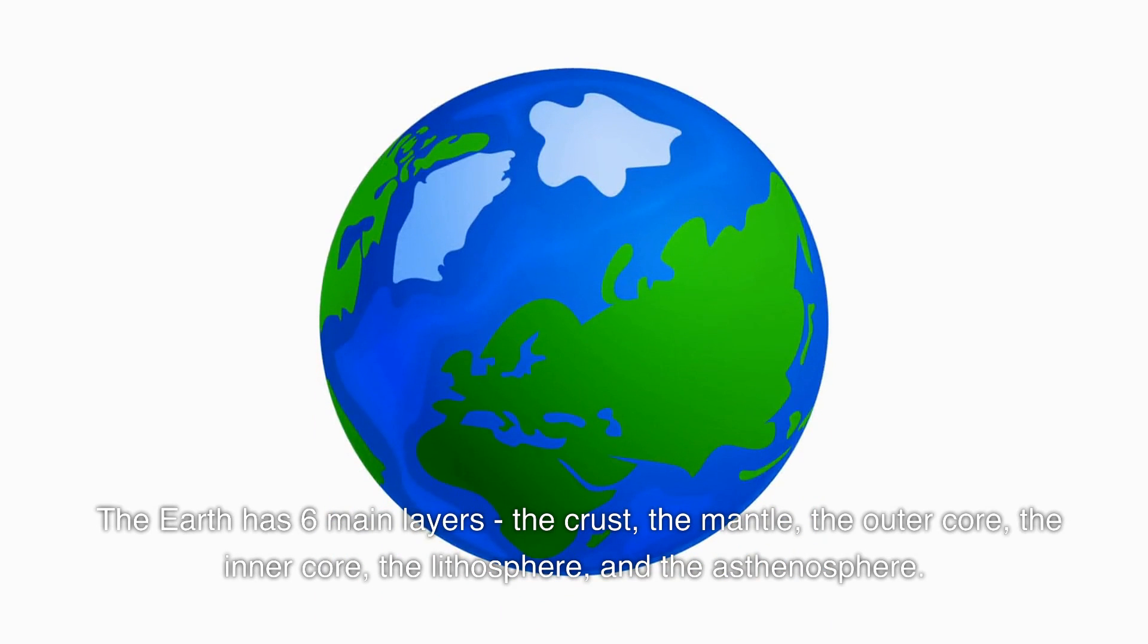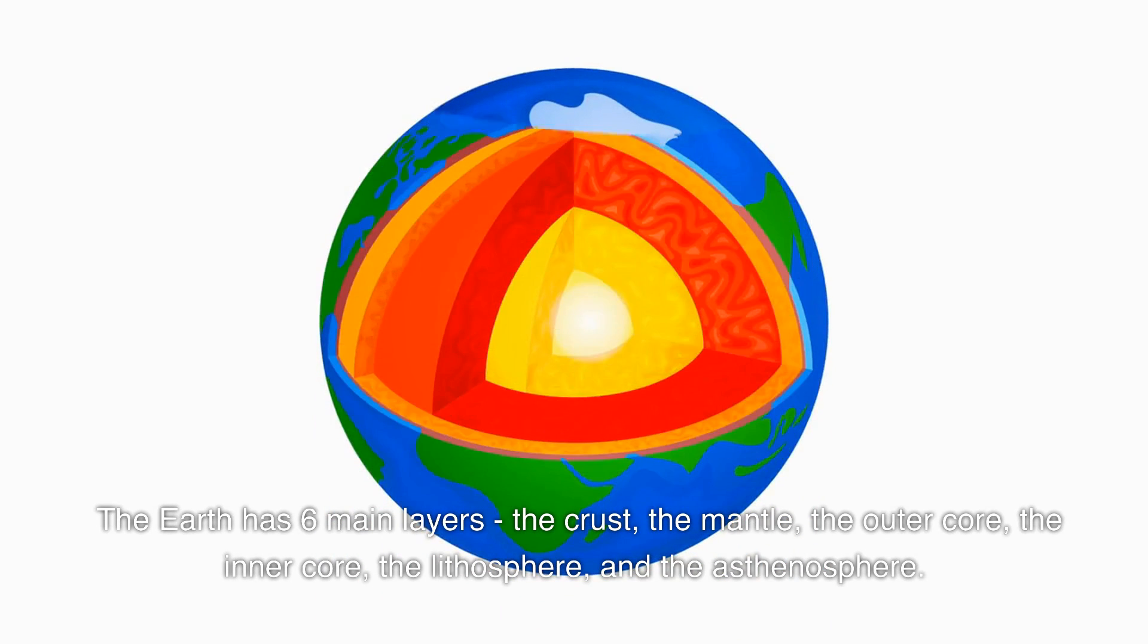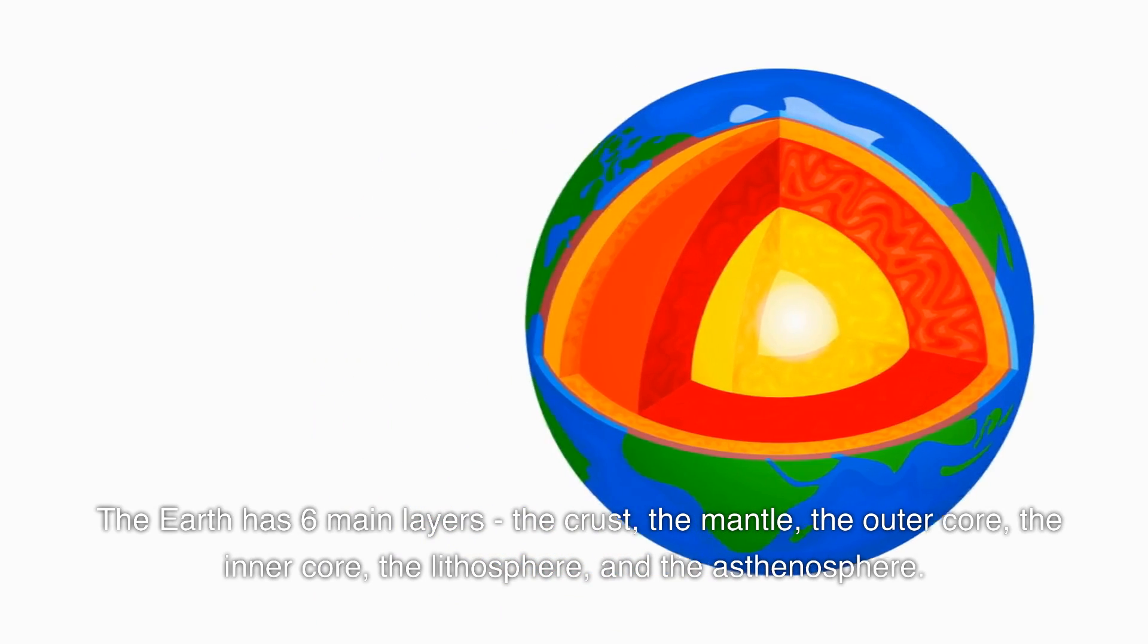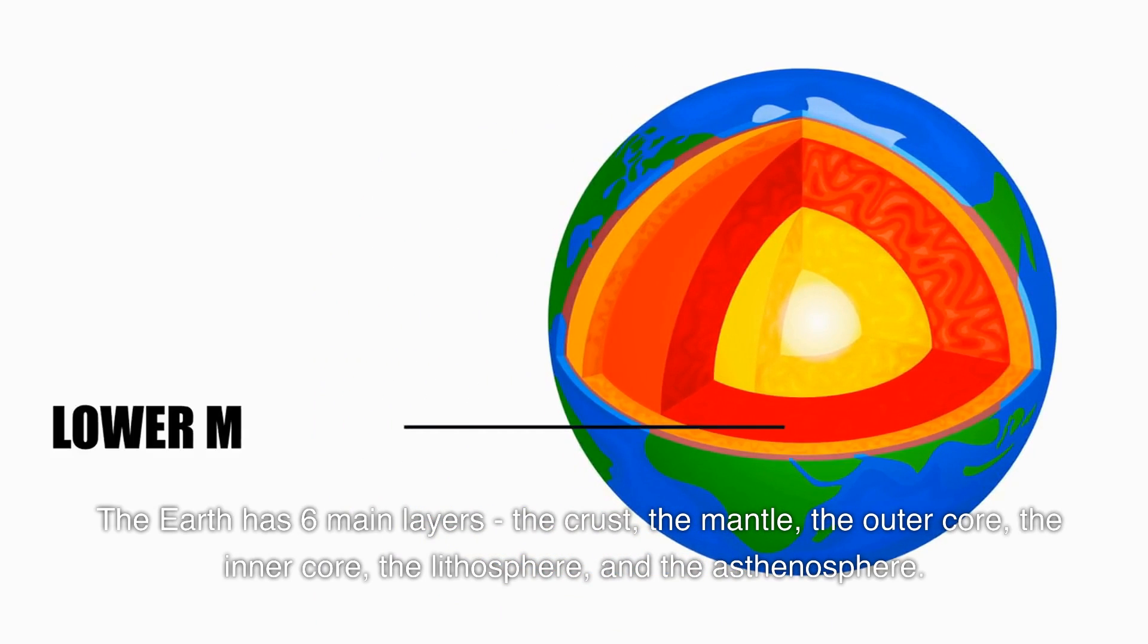The earth has six main layers: the crust, the mantle, the outer core, the inner core, the lithosphere, and the asthenosphere.